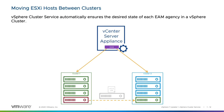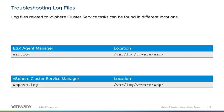Log files related to vSphere Cluster Service tasks can be found in different locations. For EAM messages, inspect the eam.log located at /var/log/vmware/eam on the vCenter Server. For the vSphere Cluster Service Manager, inspect the WCPService.log at /var/log/vmware/wcp.